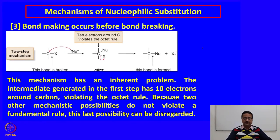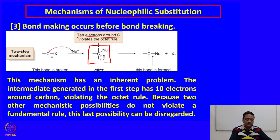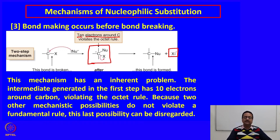The third theoretical possibility is that bond making occurs before bond breaking. If such a reaction happened, the nucleophile would attack the carbon first, producing a species where the central carbon atom has 10 electrons — which violates the octet rule. Therefore, this mechanism is not possible. It is not possible to form such a compound and then eliminate X to form the product, since carbon can accommodate a maximum of 8 electrons.